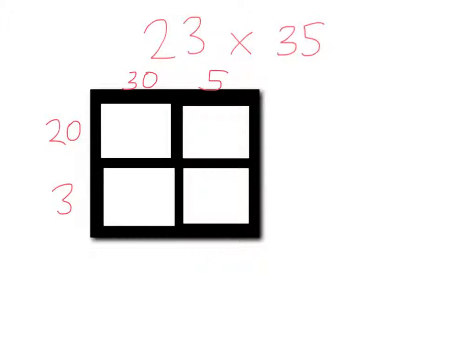That gives an answer here of 20 times 30. So our trick is to multiply the front number by the other front number. So 2 times 3 giving 6, and then 2 zeros, 1 from here and 1 from here, giving an answer of 600.